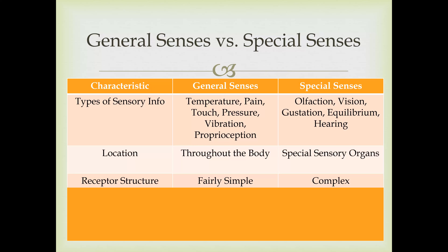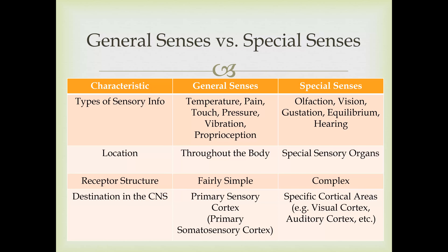Looking at the destination in the CNS: all general sense information goes to your primary sensory cortex in the parietal lobe—also called the primary somatosensory cortex, located on the postcentral gyrus. Special senses go to specific cortical areas: vision information goes to the visual cortex in the occipital lobe, hearing information goes to the auditory cortex in the temporal lobe, and so on. We'll discuss all those specific areas in chapter 17.